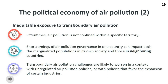Furthermore, when considering the political economy of air pollution, there is also the need to address the transboundary impacts of air pollution and its related governance frameworks. Oftentimes, air pollution is not confined within a specific territory and is transboundary in nature. For example, in Southeast Asia, Thailand's severe air pollution problem, particularly from industrial and agricultural emissions, is transboundary in nature, which extends beyond its borders and affects neighboring countries such as Cambodia, Laos, Myanmar, and Malaysia, and vice versa. Transboundary air pollution challenges are likely to worsen in a context with unregulated air pollution policies or policies that favor the expansion of certain industries, which are often driven by political or business elites.